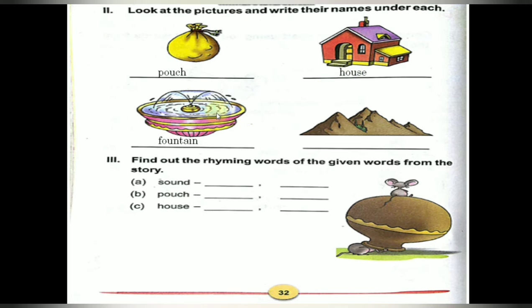Look at this picture children. What is this picture? Fountain. Do you like fountains? You can find fountains in the park also. Fountain — F-O-U-N-T-A-I-N. Look at this picture — what is this? Mountain — M-O-U-N-T-A-I-N mountain.